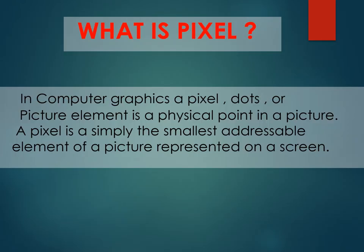What is a pixel? In computer graphics, a picture dot or picture element is a physical point in a picture. A pixel is simply the smallest addressable element of a picture represented on a screen. A majority of pictures we see on our computer screen are raster images. The selfie you click with your mobile phone is another example of a raster image. An image is made up of a collection of pictures referred to as a bitmap.